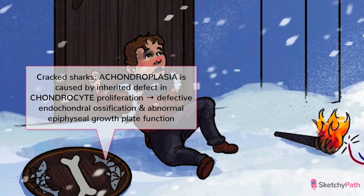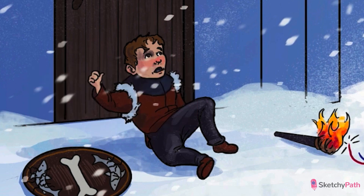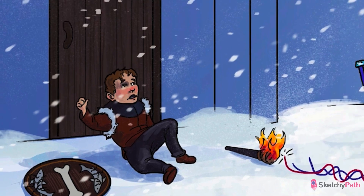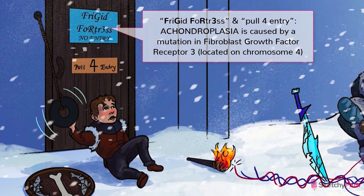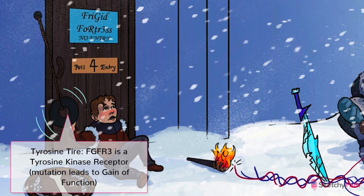This results in defective endochondral ossification and epiphyseal growth plate function. Notice that the cracks in the shield are through the cartilaginous shark specifically, to emphasize that the defect is with the chondrocytes, not the bone-forming cells. The defect in chondrocyte proliferation is due to a gain-of-function mutation in fibroblast growth factor receptor 3, or FGFR3, which is located on chromosome 4. FGFR3 is a type of tyrosine kinase receptor, so we've brought in our recurring tyrosine tire symbol — a doorbell, I guess? And to illustrate that this is a gain-of-function mutation specifically, we've drawn Chondrion pulling excessively on that tyrosine tire.